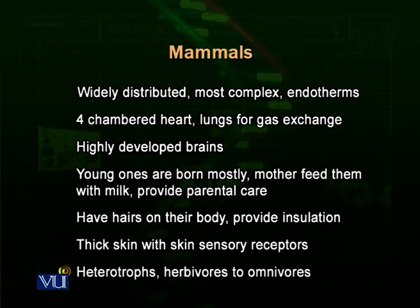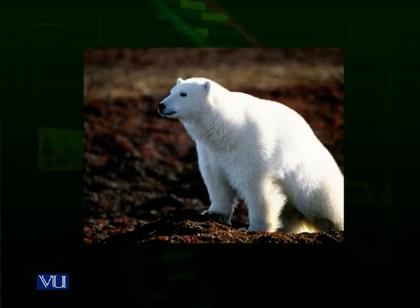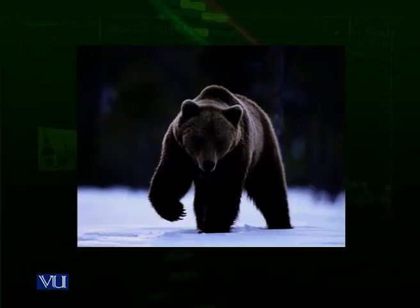Mammals are also heterotrophs, ranging from herbivores to omnivores — there is a wide diversity of mammals on planet Earth. There are many herbivorous mammals like goats, buffaloes, and cows. There are carnivorous mammals like lions and wolves. There are also omnivorous mammals like bears, including white bears and black bears.